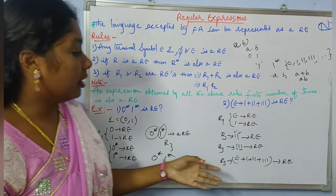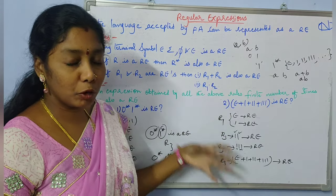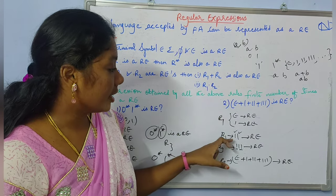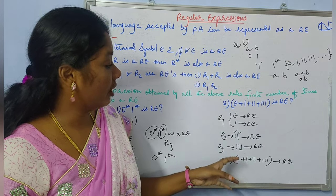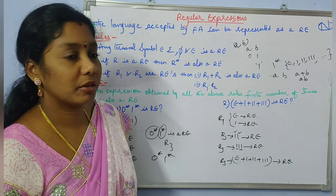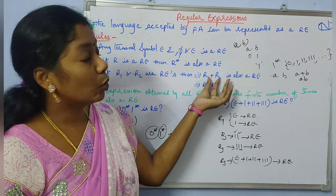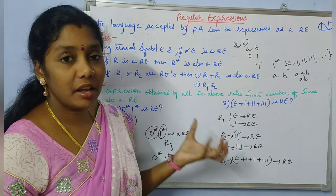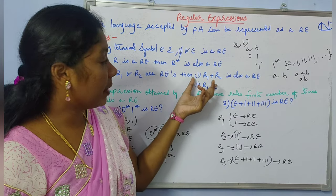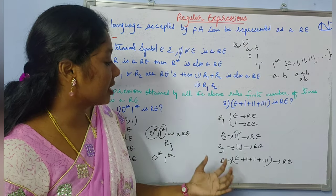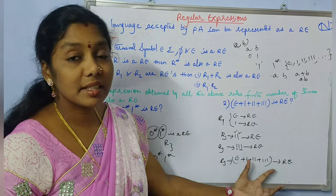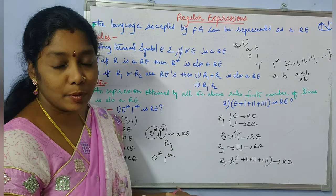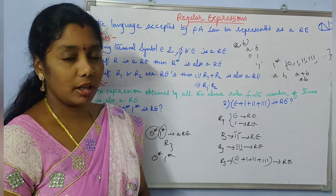Why? Because epsilon is a regular expression, 1 is a regular expression, 11 is also a regular expression, and 111 is also a regular expression. The union of two regular expressions is again a regular expression. So based on rule 3, we can say that the union of all these is a regular expression. In this way, we can identify whether an expression is a regular expression or not.